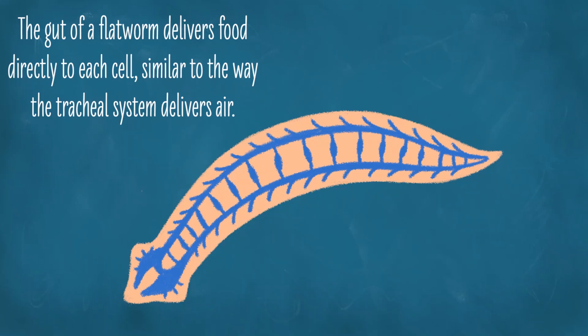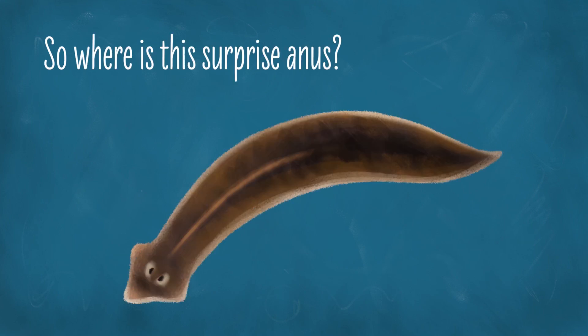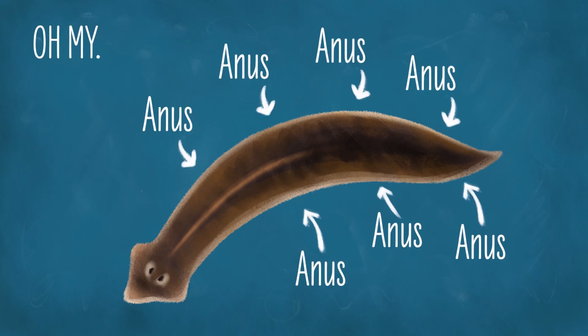It turns out that the gut of the flatworm works a bit like the tracheal system of the insect, but instead of delivering air to each cell, it delivers food directly to each individual cell — it fingers out throughout the entire body. In very long flatworms, food gets very far from the mouth, making it difficult to get back for double duty, so they do have an anus. In fact, as if to make up for all the flatworms that are sans anus, they often have multiple anuses. So while you should be thankful that you have an anus, aren't you glad you don't have more than one? And now you know!